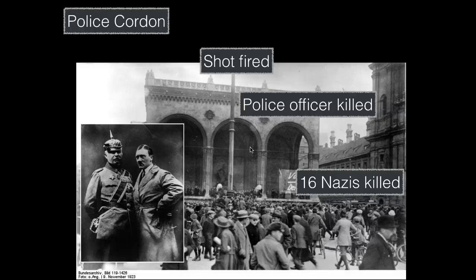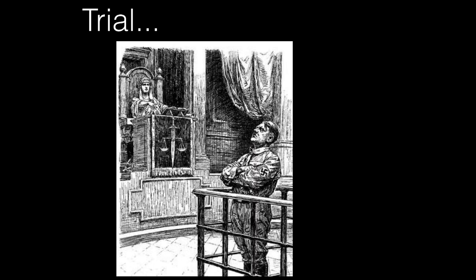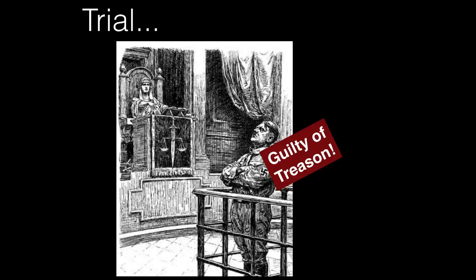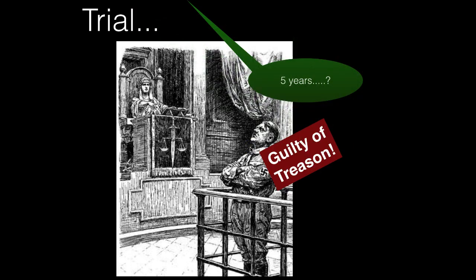A shot rang out and a policeman was killed. The police answered with a volley of fire and 16 Nazis were killed. Hitler crawled away - his bodyguard actually took a couple of bullets for him - and was whisked away by car to the house of his friend Ernst Hanfstaengl. Ludendorff, being the old military general he was, stiffly marched towards the police line and was promptly arrested. A couple of days later Hitler was also arrested, hiding in Hanfstaengl's attic. His public trial actually worked in Hitler's favor: though found guilty of treason, the sympathetic judge allowed Hitler to make lengthy speeches reported by newspaper men, spreading his nationalist message.